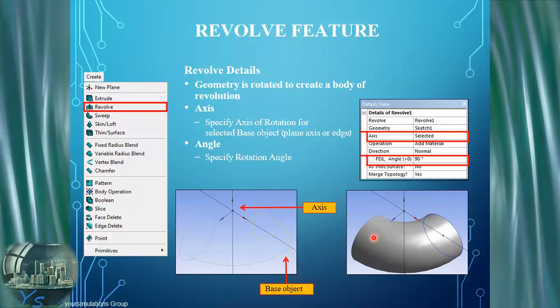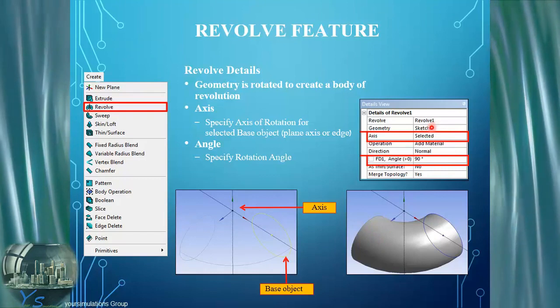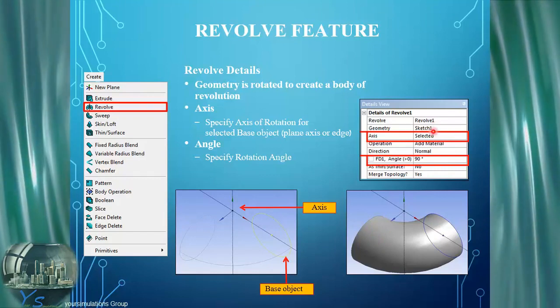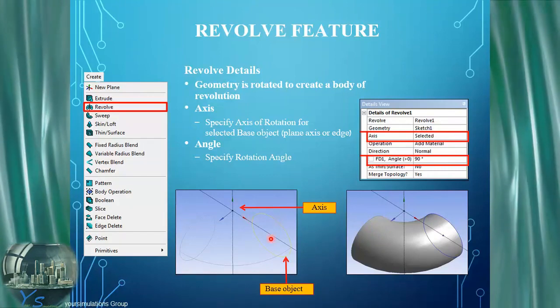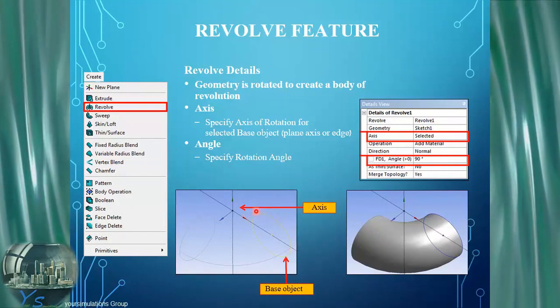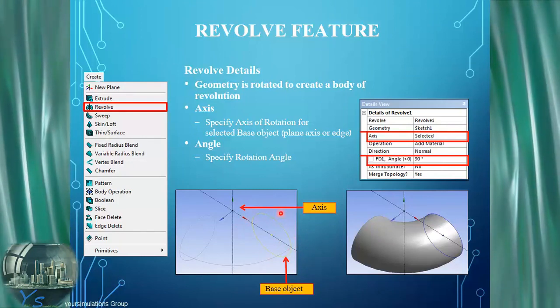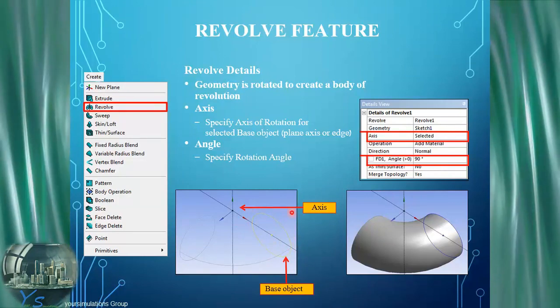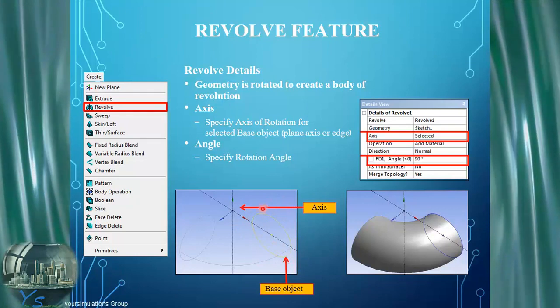Here we can see the options in the details view. We select the geometry — in this case it's sketch 1. We can see the example here, which is this yellow sketch, which is the base object for the revolve in this case.